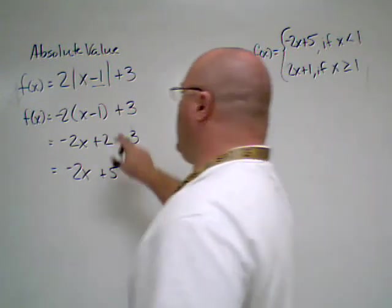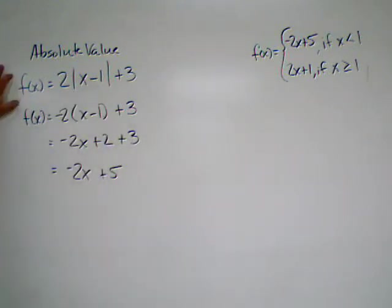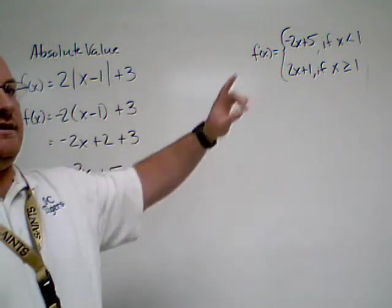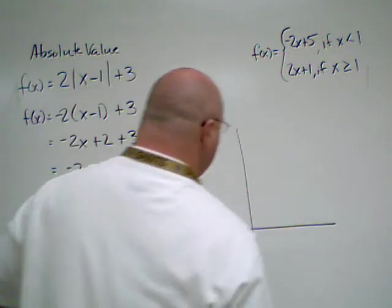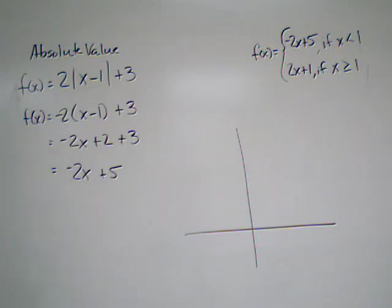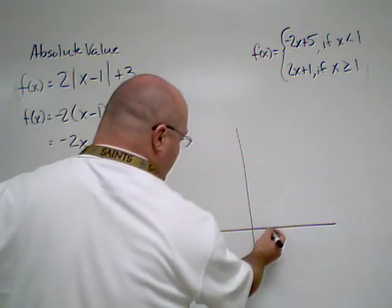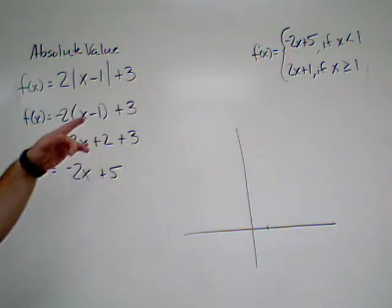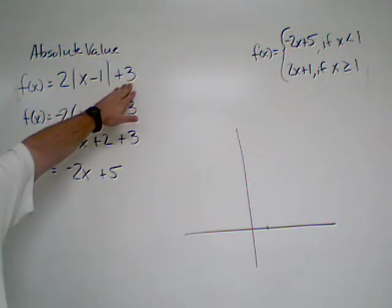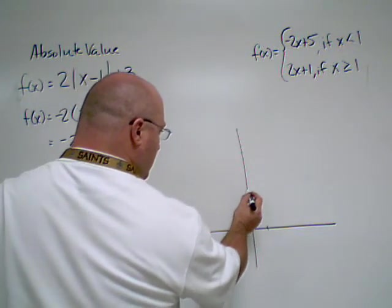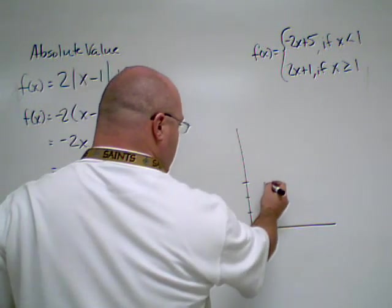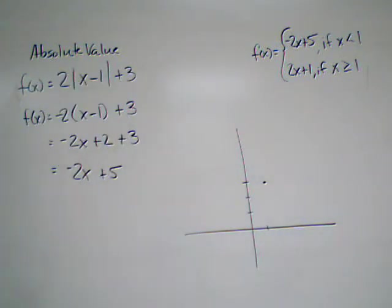So we've taken this absolute value function right here and we've converted it into the appropriate piecewise function, which is there. Now if we were to do this on a graph, and it's going to be a rather rough sketch, but that's okay. We know it's going to be over 1 because we found that in our vertex. And as we see here, we have a shift, a vertical shift of positive 3. So we're going to go up to 3, and that's going to be our vertex.